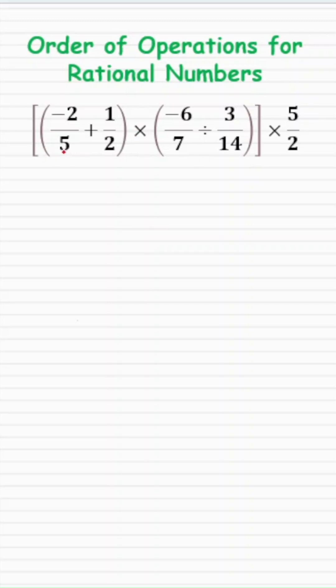I'll start with the innermost brackets. The least common multiple or the LCM of 5 and 2 is 10. So multiply it by 2 and multiply it by 5 to make the common denominator of 10.